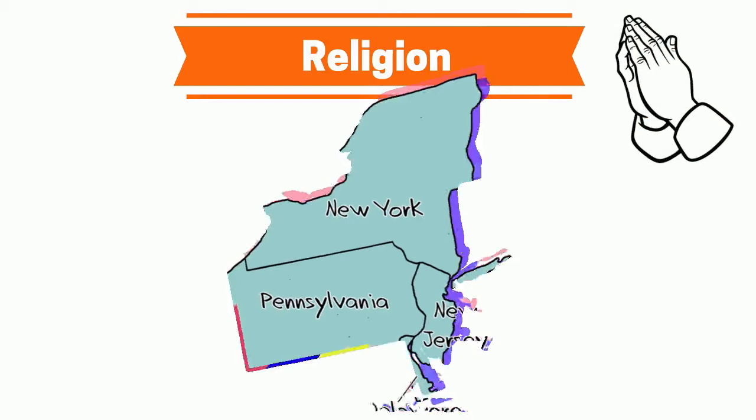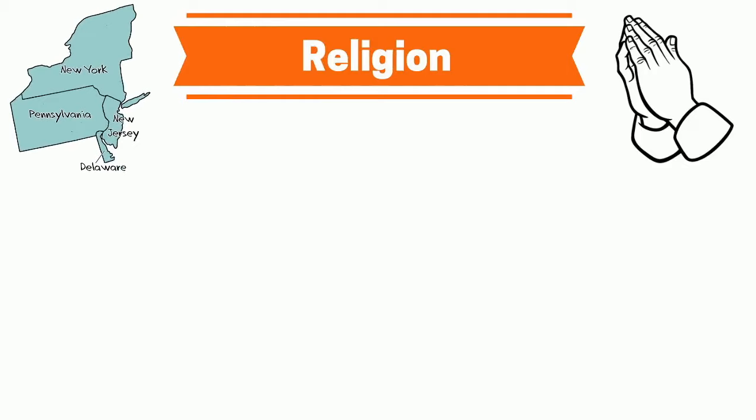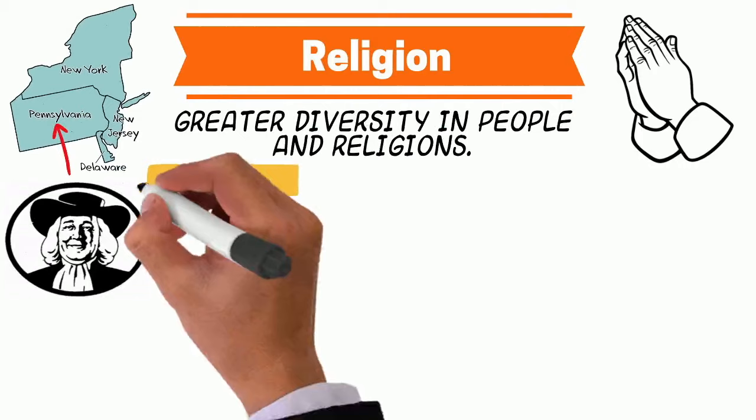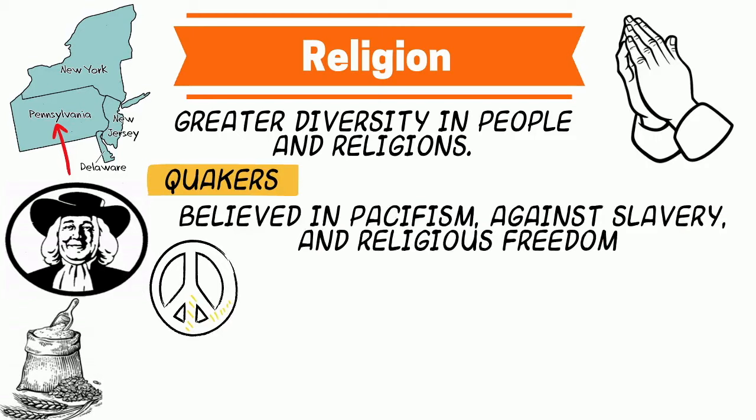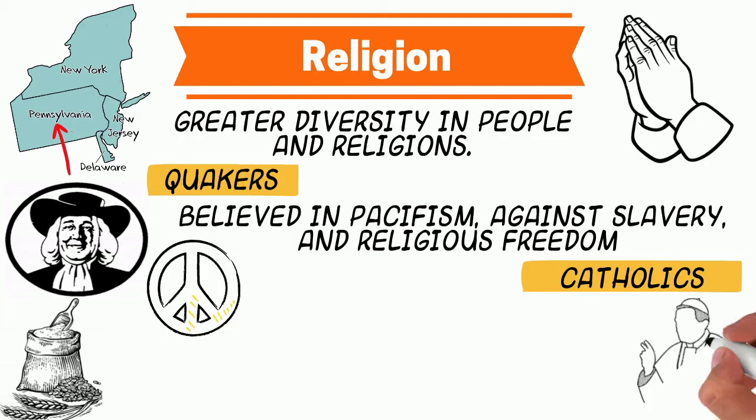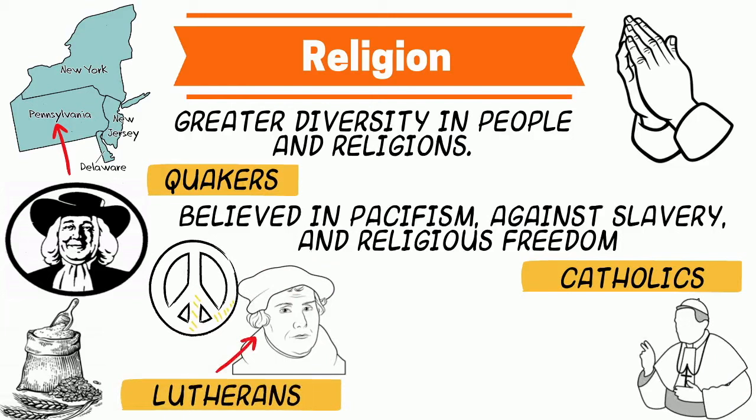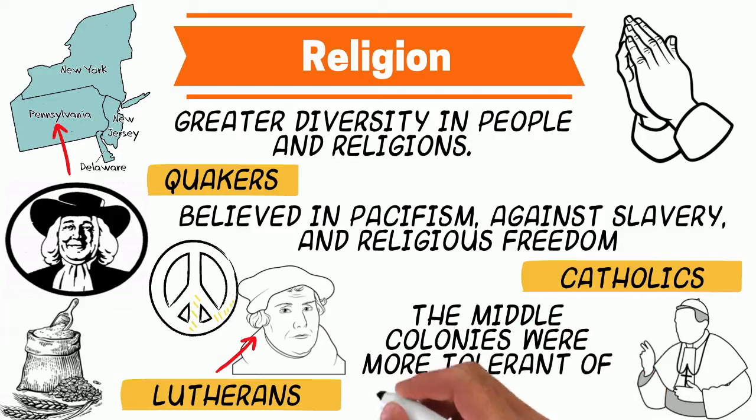As far as religion is concerned, the Middle Colonies were nowhere near as strict as their New England neighbors. They were quite relaxed when it came to choosing your faith because they had a greater diversity in people, and therefore a greater diversity in faith. A major religion we need to know from this region is the Quaker faith — they believed in pacifism, they were against slavery, and they believed in religious freedom. And yes, that's the same guy from Quaker Oats. This region also features Catholics and Lutherans, which made the Middle Colonies unique for having so many different faiths in the same region.